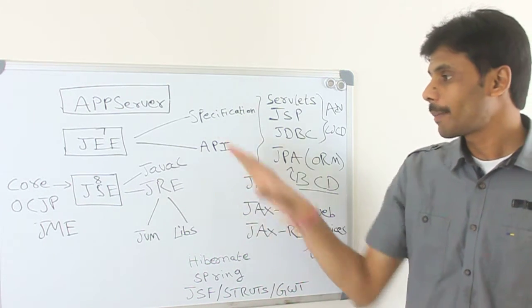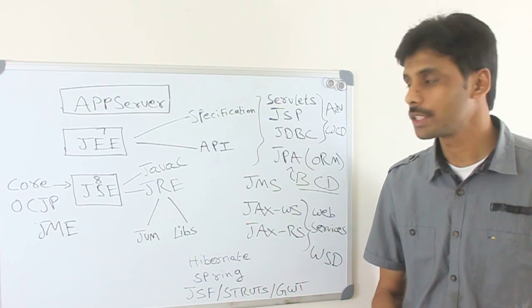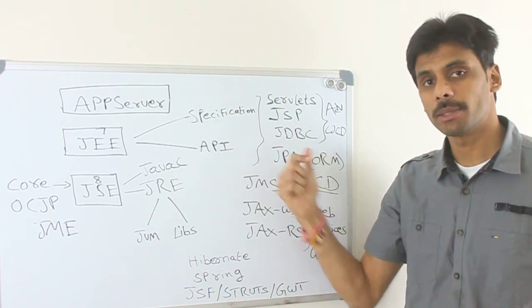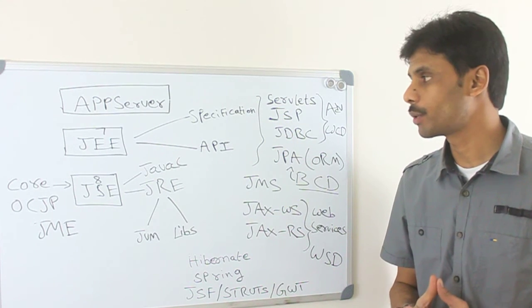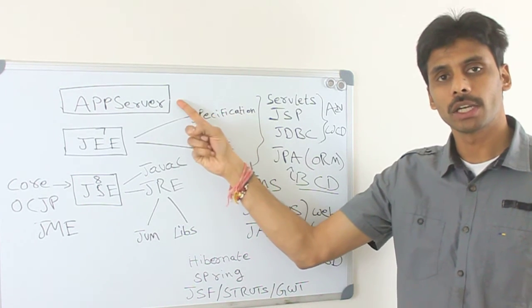So quickly summarize up to here. You start learning Java using the Java standard edition. Write a few cool desktop applications there. Then you will move on to JEE. You will learn the servlets, JSP and JDBC. There are a lot of videos there on my YouTube channel. Here you will be learning only the API. The specification is for the application servers.